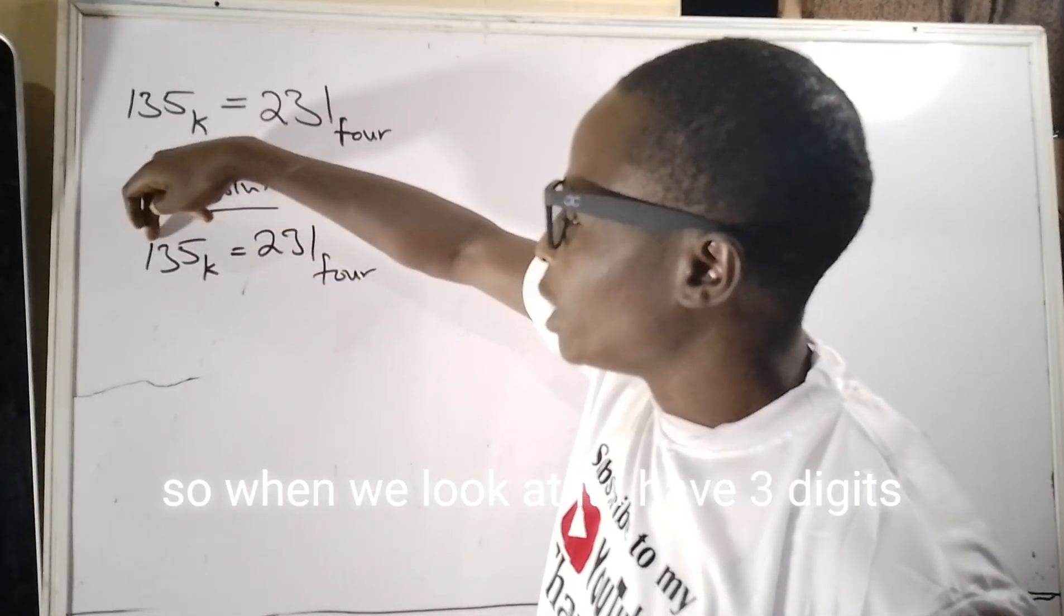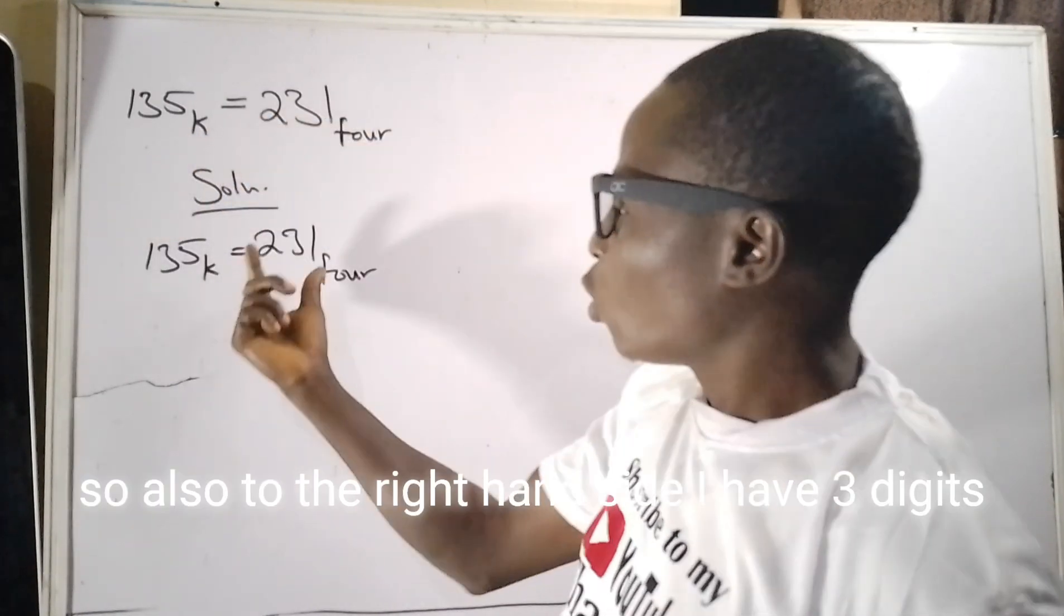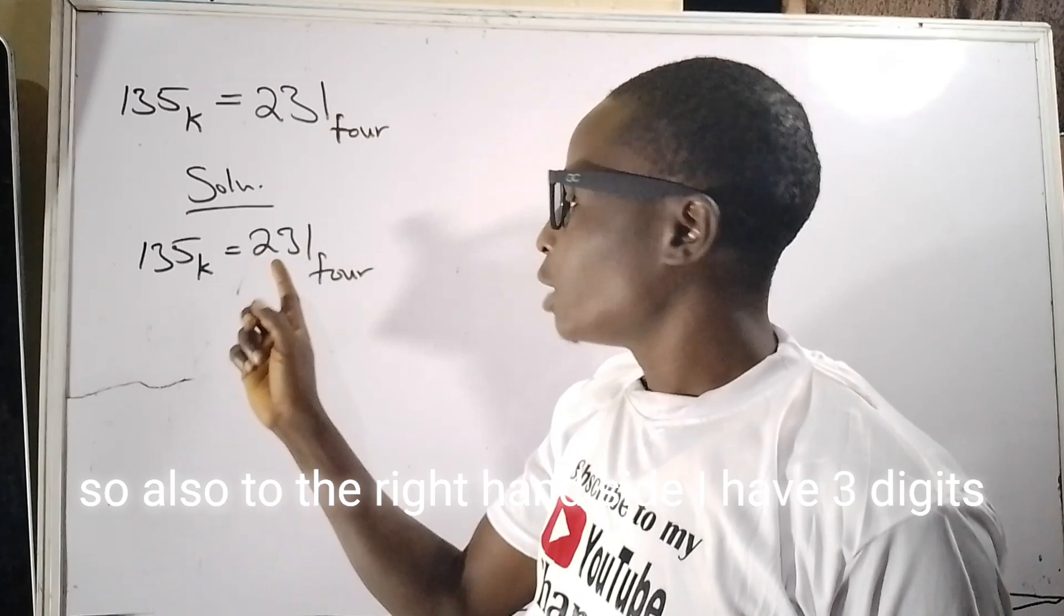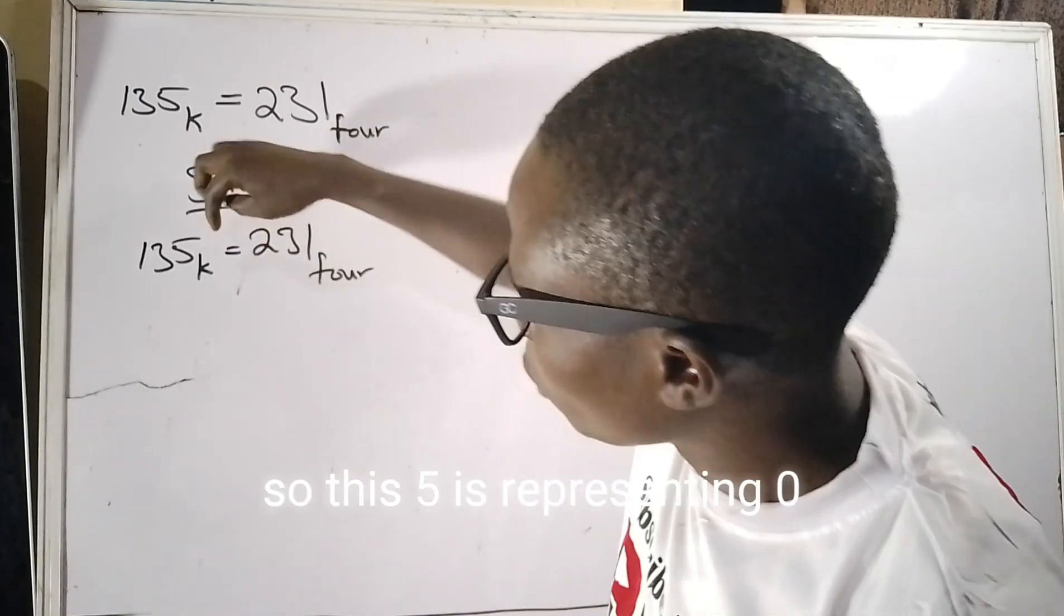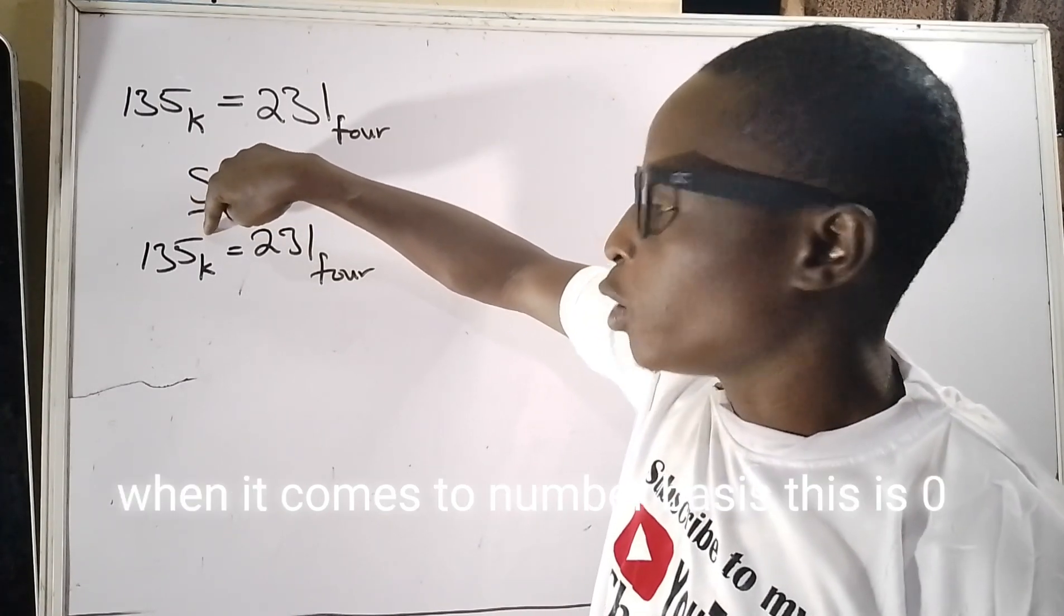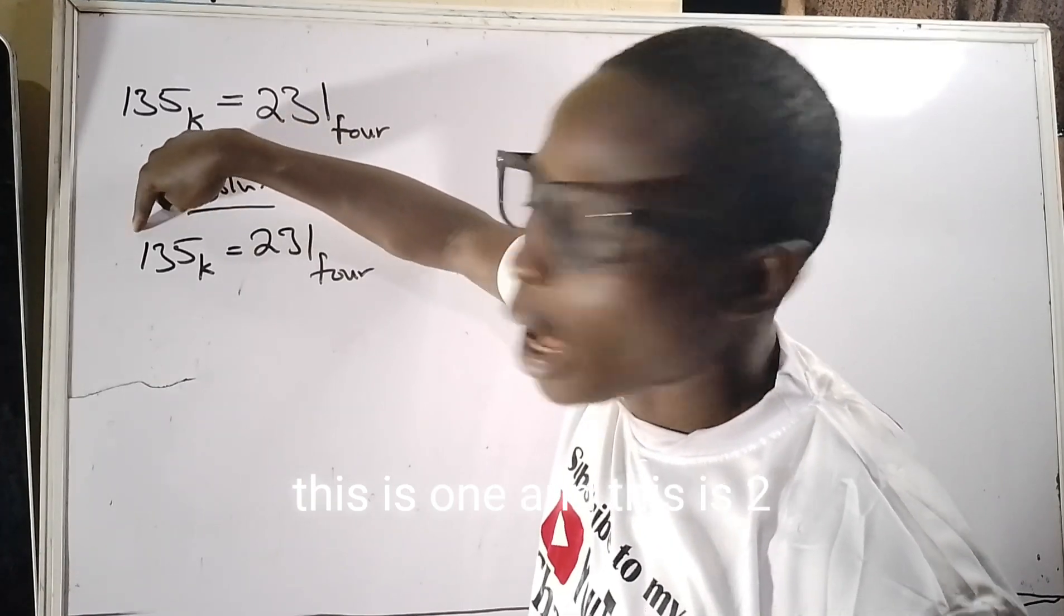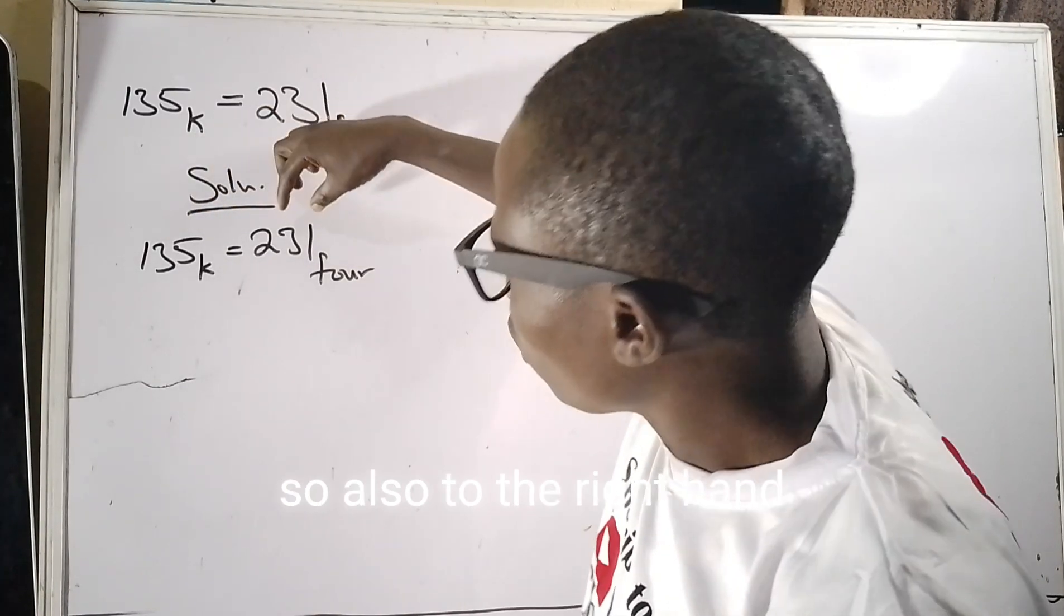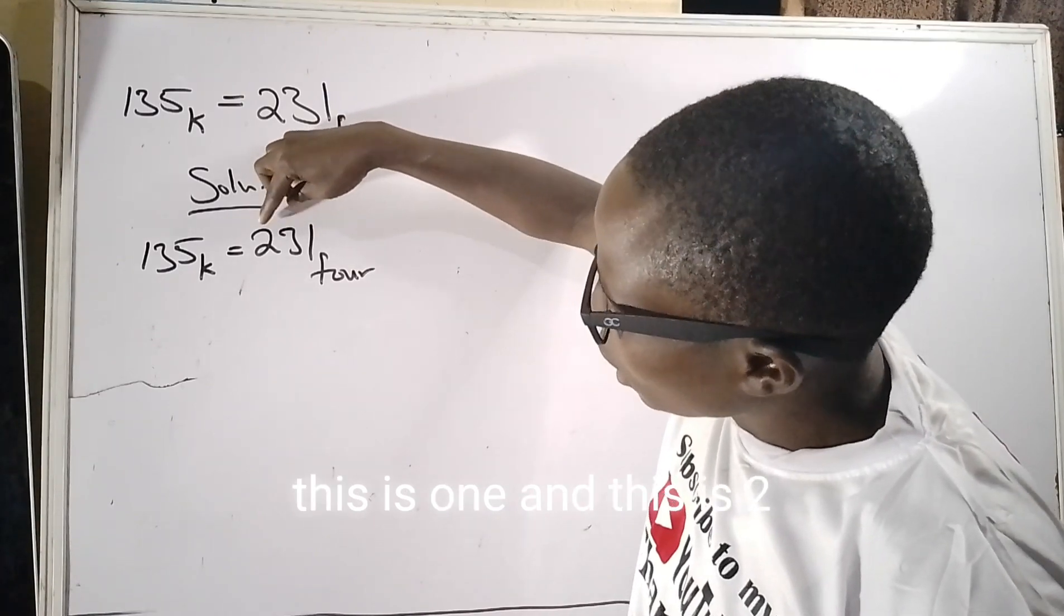When we look at it, I have three digits here: one, three, and five. So also to the right-hand side I have three digits: two, three, and one. This five is representing zero when it comes to number bases. This is zero, this is one, and this is two. So also to the right-hand side: this is zero, this is one, and this is two.